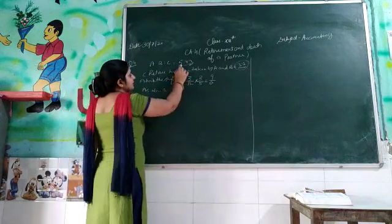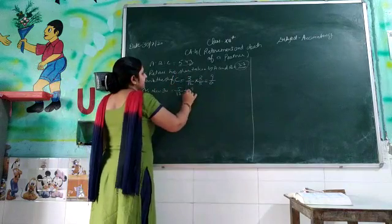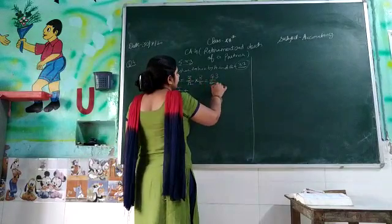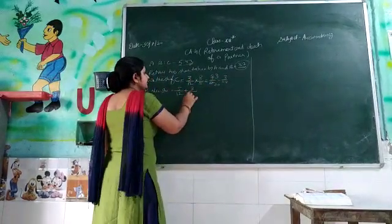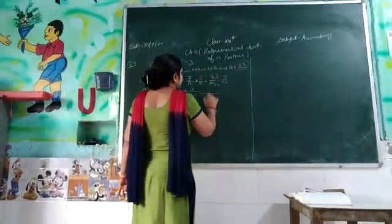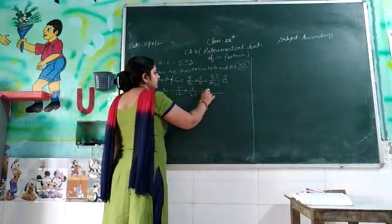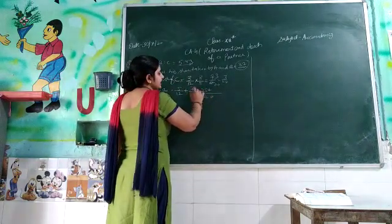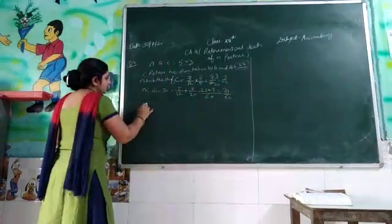Now we have to calculate A's new share. A's old share is 5 by 12 plus the gain. Taking LCM as 60: 5 by 12 becomes 25 by 60, plus 9 by 60, which equals 34 by 60.